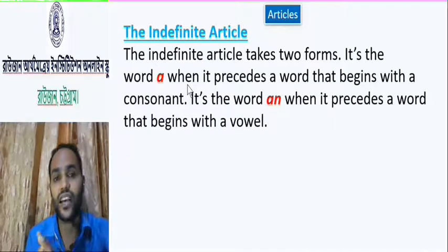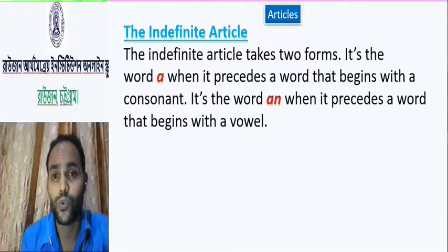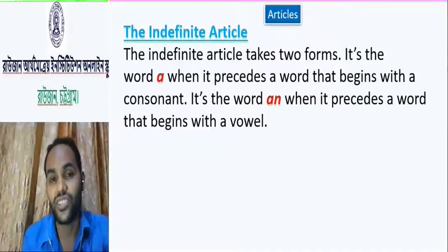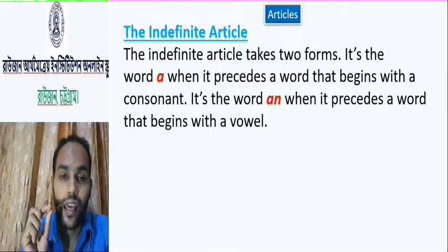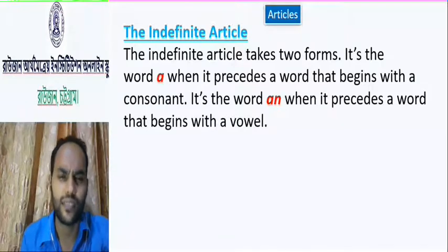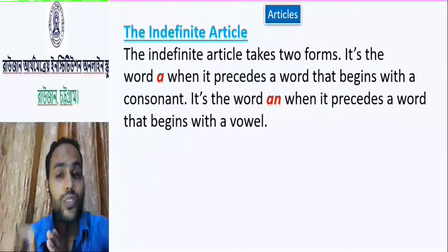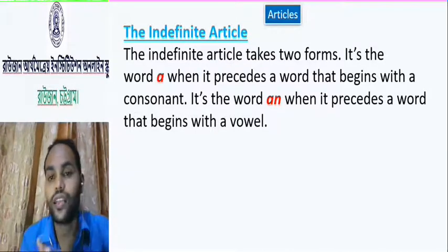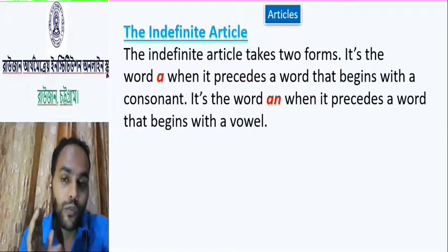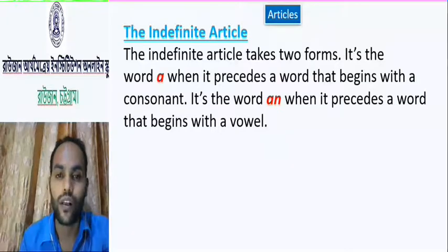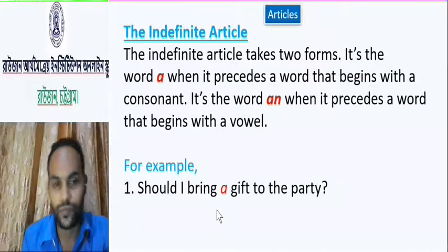And now, indefinite articles. The indefinite article takes two forms. It is the word 'a' when it precedes a word that begins with a consonant sound, and the word 'an' when it precedes a word that begins with a vowel sound. We will put 'an' before a vowel sound and 'a' before a consonant sound. For example: 'Should I bring a gift to the party?'